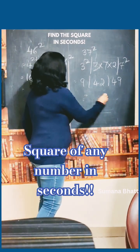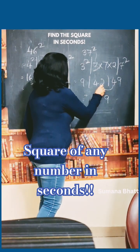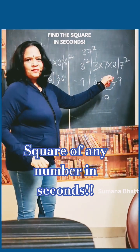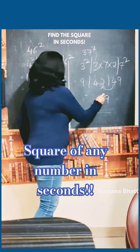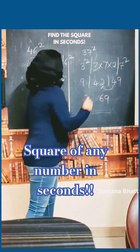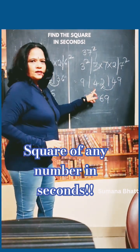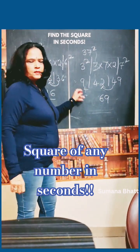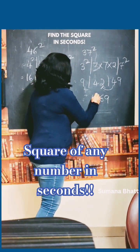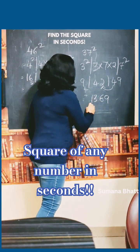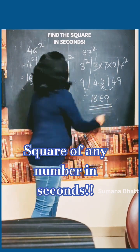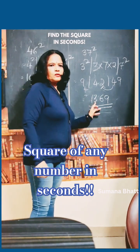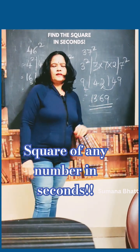Write this 9 as it is. Add 4 to the previous: 42 becomes 46, write 6, and add 4 to the next: 9 plus 4 is 13... So 37 square is 1369.